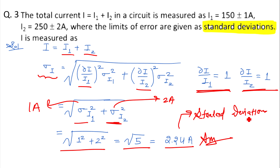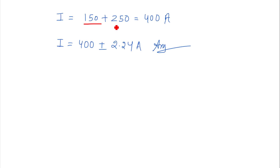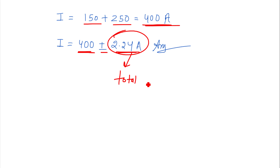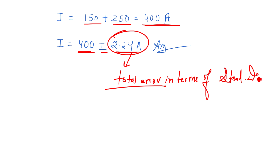So 2.24 is the total error in terms of standard deviation in current i. For the total current: i1 = 150 A and i2 = 250 A, these true values are directly added: 150 + 250 = 400 ampere. Therefore i = 400 ± 2.24 ampere. This 2.24 is the total error in terms of standard deviation. This is how we solve this type of question when error is given in standard deviation form.